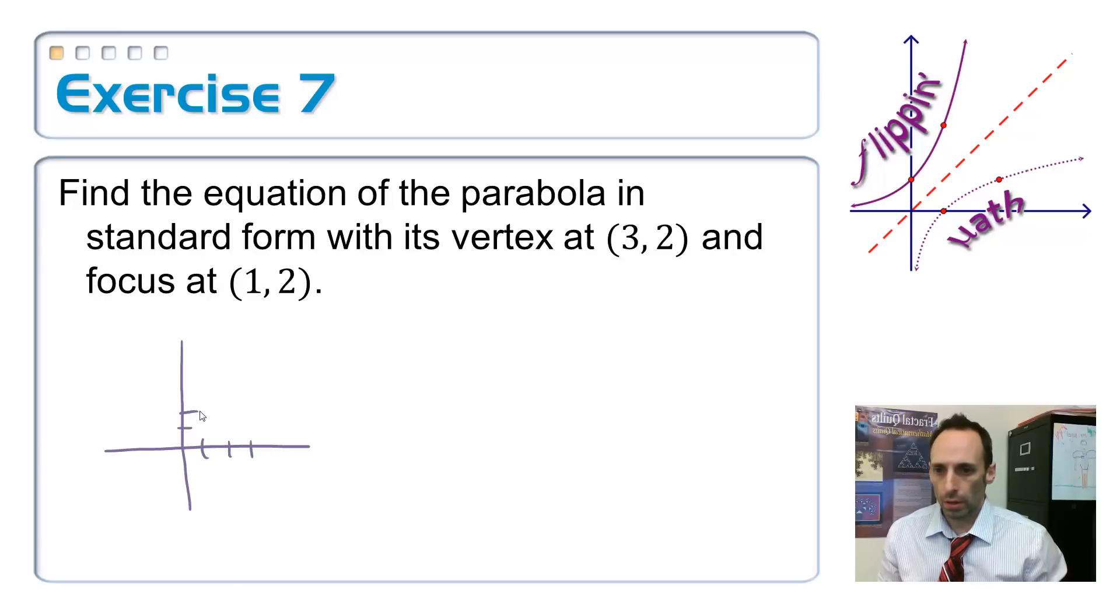And what do we got? 3, 2 for the vertex. Here we go. And the focus is at 1, 2. 1, 2 right there. So, the parabola has to wrap around the focus. So, it's going to go like this. And like this. Some kind of way. This one is opening to the left. It's still a y squared though.